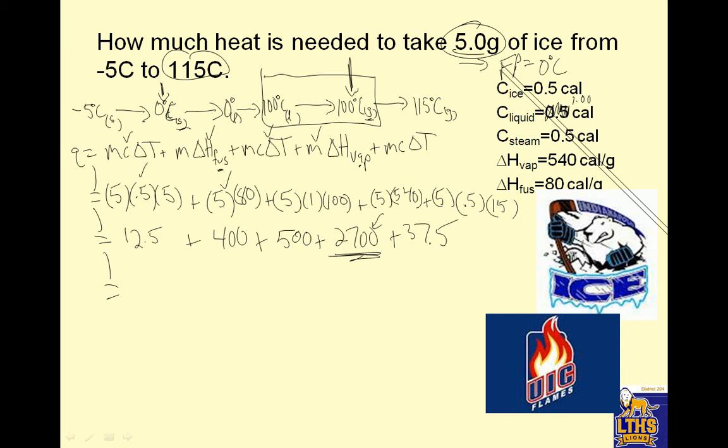So let's add them up. 12.5, plus 400, plus 500, plus 2700, plus 37.5 is 3650. And then my Q is based on this right here. It's all in calories. So it's calories.